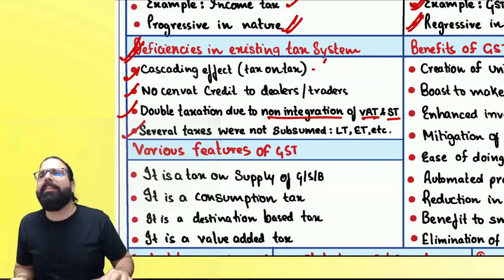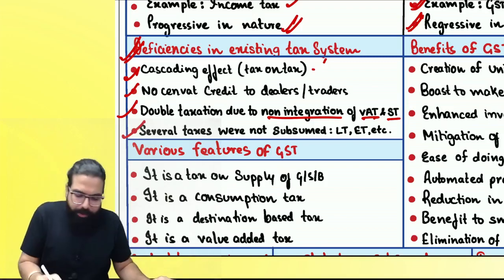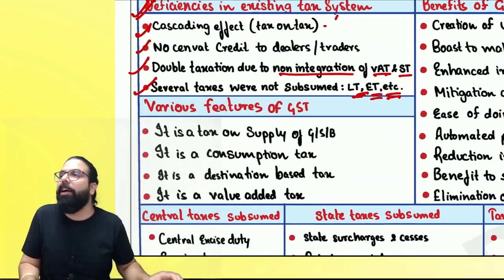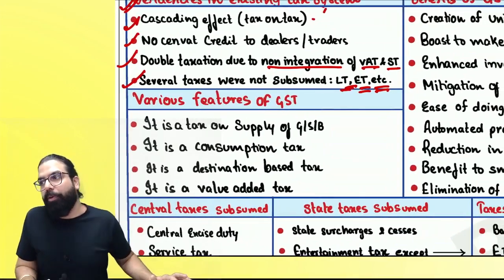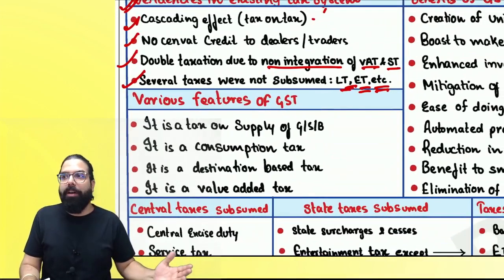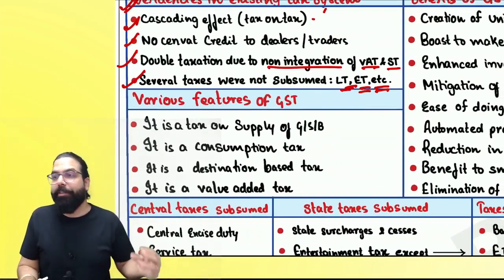Fourth: several taxes like luxury tax, entertainment tax, etc. were not being subsumed. These were the main deficiencies in the existing tax system before GST came in.